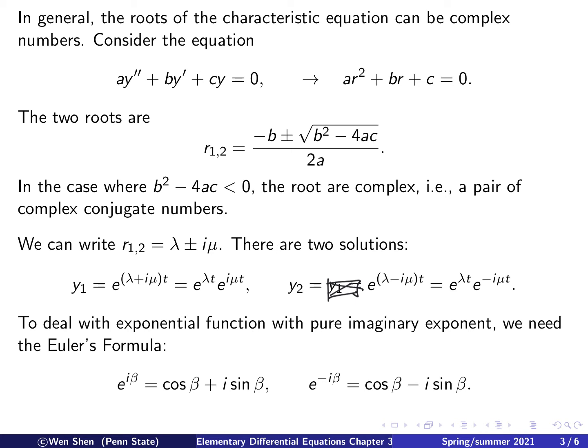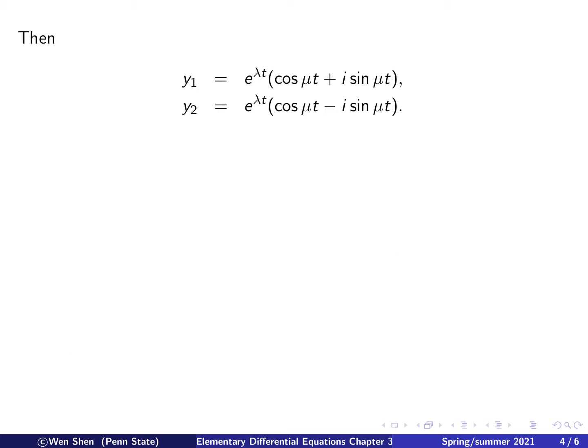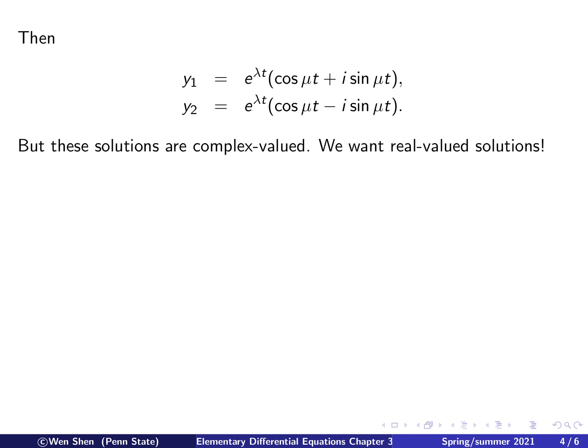Now we utilize Euler's formula to rewrite y1 and y2. So y1 is e to the lambda t times the quantity cosine mu t plus i sine mu t, applying Euler's formula directly. The second solution is the same except with a minus sign on the sine term. Both of them are solutions for the original equation, but there is a problem: y1 and y2 are both complex-valued.